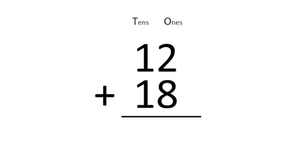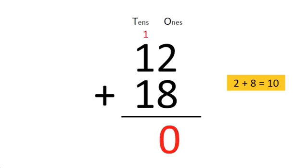How do you add 12 and 18? Add the ones: 2 plus 8 is equal to 10. With a 1 carrying over, we have 1 plus 1 plus 1 is equal to 3.